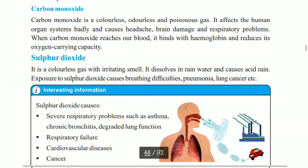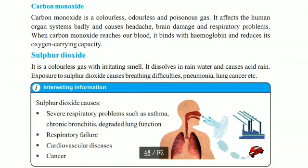The next pollutant is sulfur dioxide. It is a colorless gas with an irritating smell. It dissolves in rain water and causes acid rain.